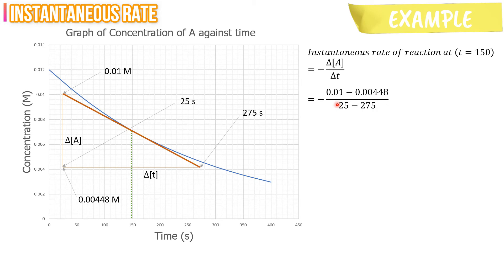For this example, the instantaneous rate of reaction at T equals to 150 seconds is 2.208 times 10 to the minus 5 molar per second. Please note that the value of rate of reaction is always positive.